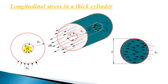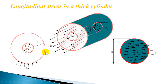Consider a thick cylinder with internal radius Ri, external radius R0, and length L. It is subjected to internal fluid pressure Pi and external pressure P0. Due to this internal fluid pressure acting on the inner curved surface, the walls are stretched in the circumferential direction, inducing hoop stress (circumferential stress) and also radial pressure, which is compressive in nature.